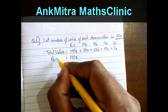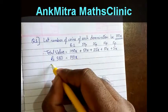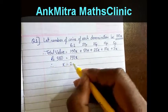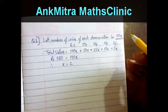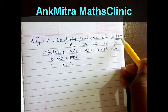So rupees 380 is equal to 190x, therefore we get x is equal to 2. So since x is equal to 2, the number of coins of each denomination will be 100x.